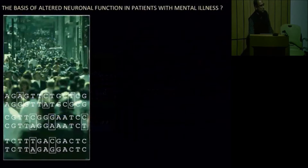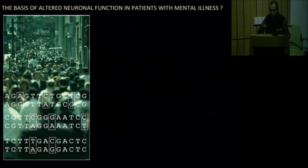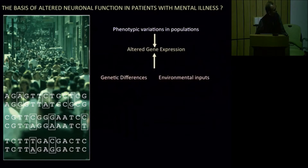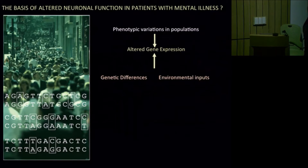Of course, we are all very different from each other — no two people in this room are the same. We behave in slightly different ways, and if you look at our genomes, there are differences in the genetic code between any two people. The question really is, if we were to find differences in the way the brain functions, do they arise from differences in the genetic code, from environmental influences, or what might the basis be? Any phenotypic variations one might see in populations may arise from altered gene expression, coming either from genetic differences or from environmental inputs.